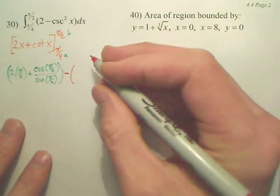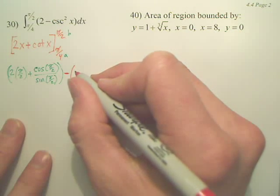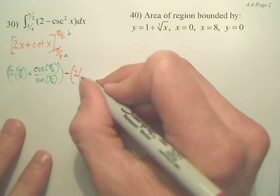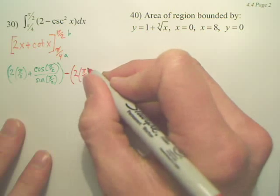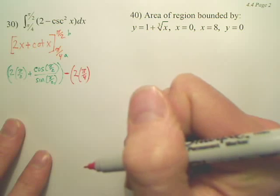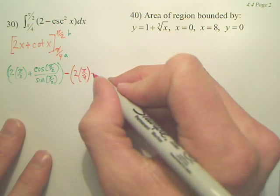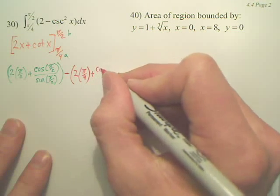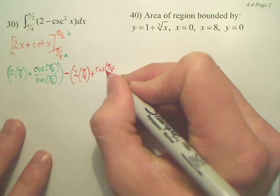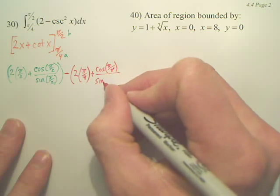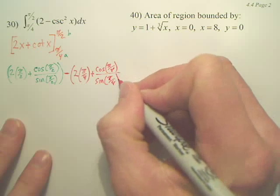Minus F of a, which is 2 times pi over 4, and then plus cosine(pi/4) over sine(pi/4).